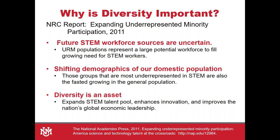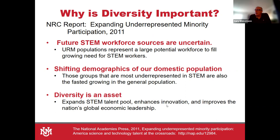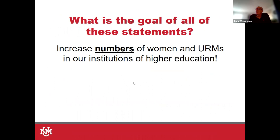Diversity enhances innovation, but many people don't know why. What are the goals of these statements? The goals are increased numbers of women and underrepresented minorities in our institutions of higher education. It really focuses on the numbers, but doesn't talk about anything other than bringing in more people. The goal is also to create a level playing field in academia. How do we do this? We have targeted scholarship availability, admissions policies — affirmative action prior to court rulings — but we still have admissions policies that bring in underrepresented minorities.